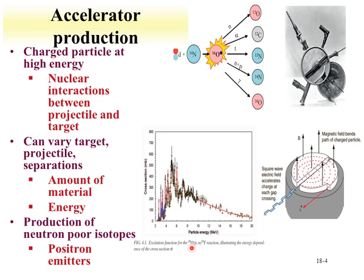Here is the reaction cross-section for a proton on oxygen-18 producing fluorine-18, which is a useful radiopharmaceutical. One can increase the reaction cross-section—the probability for the reaction—by tuning the particle energy. So you can tune the target material, the particle type, and the particle energy to vary and produce specific yields of isotopes.